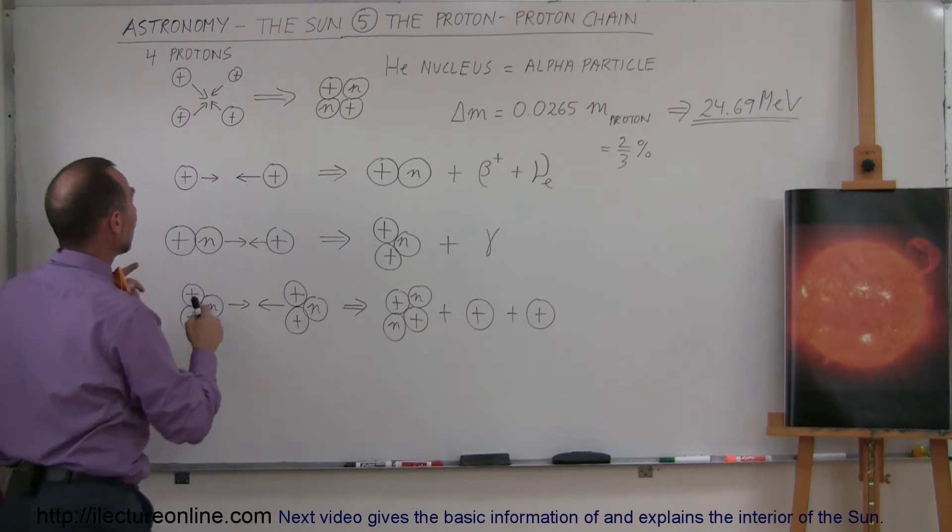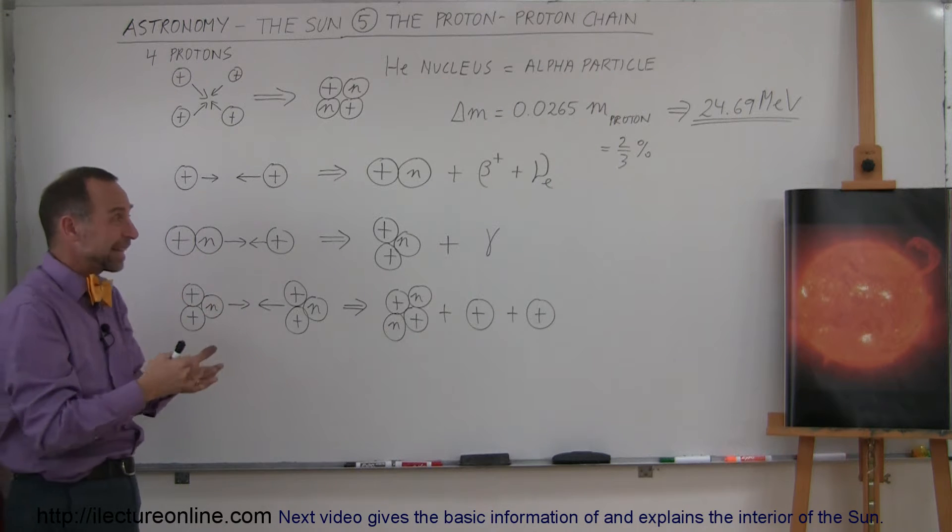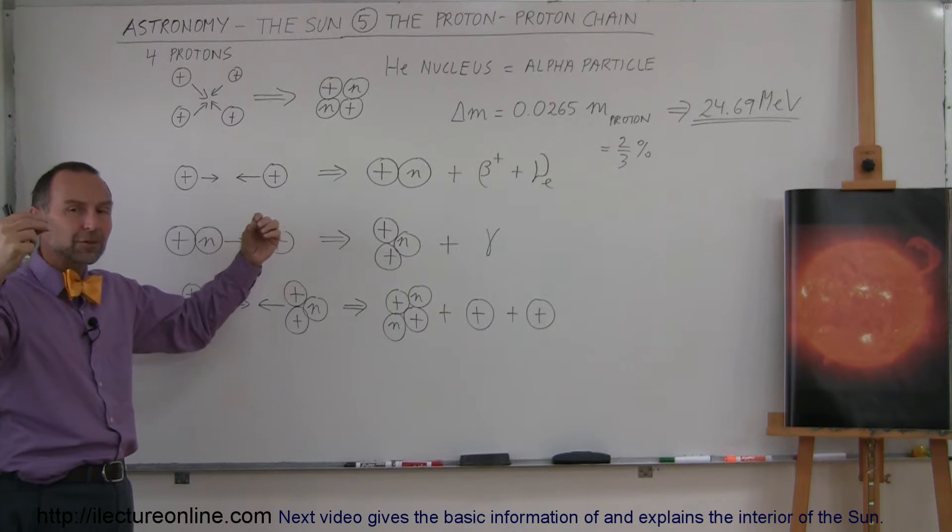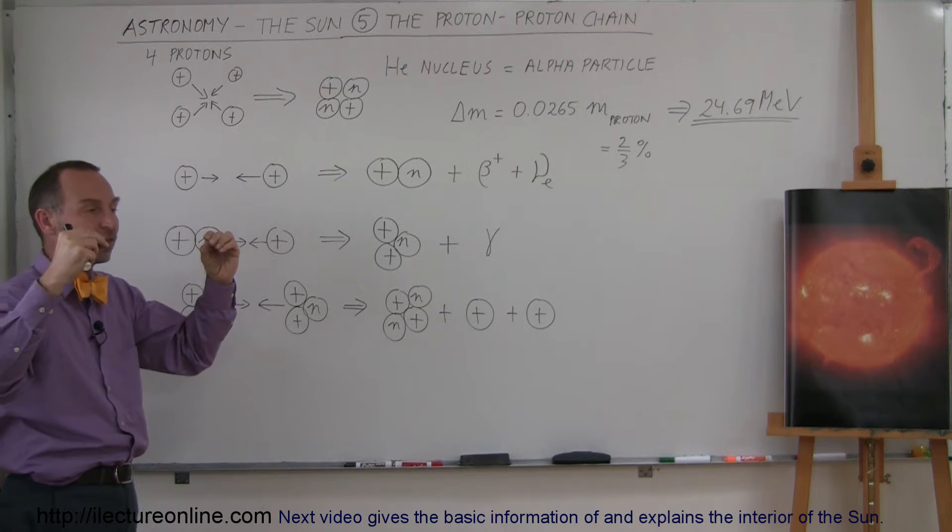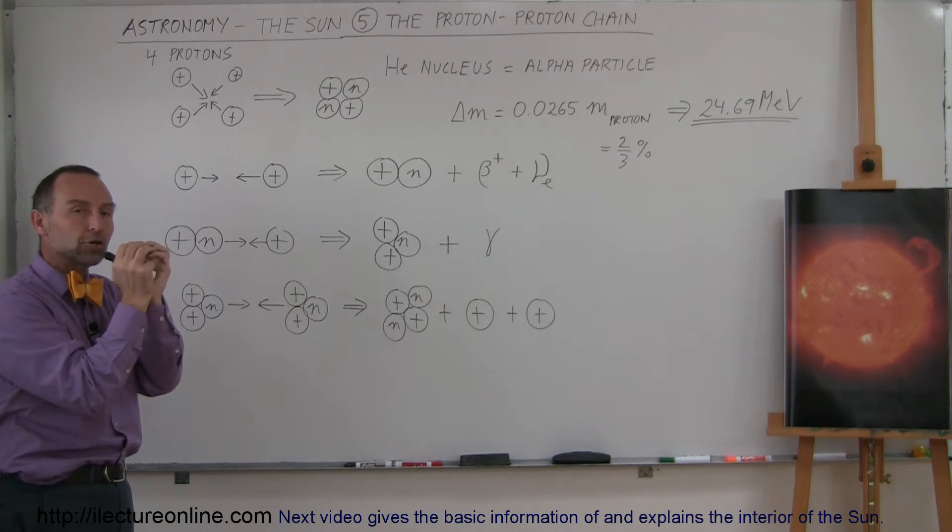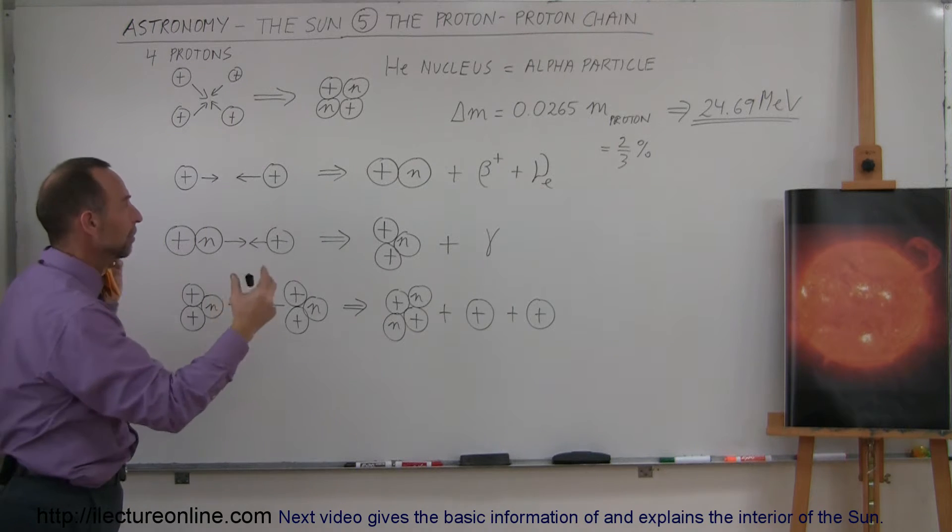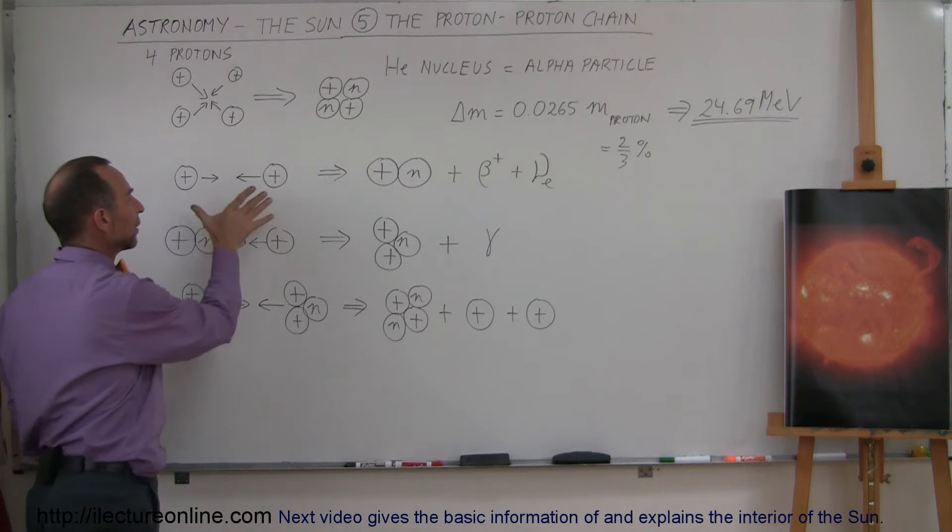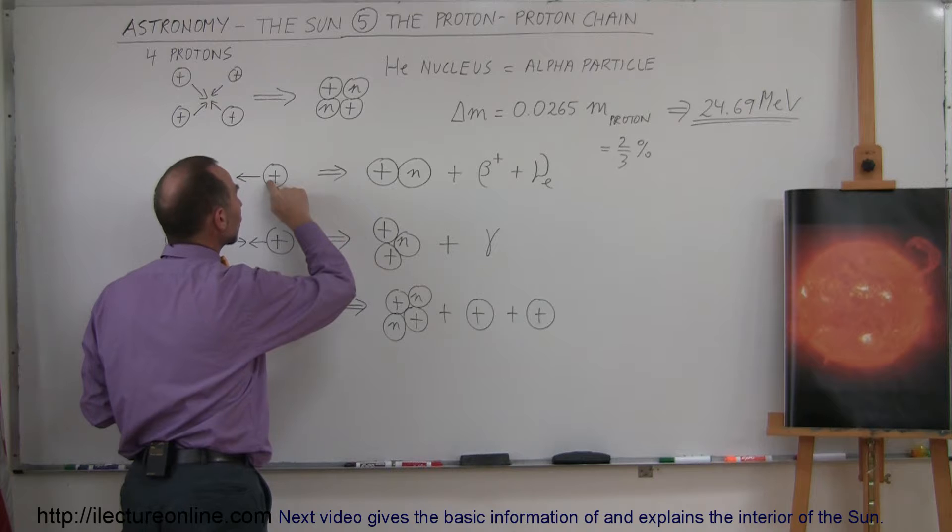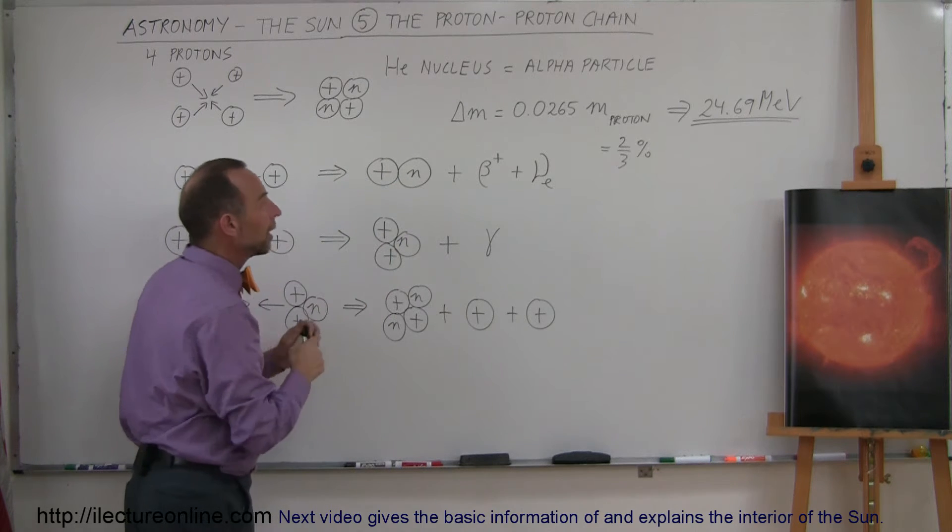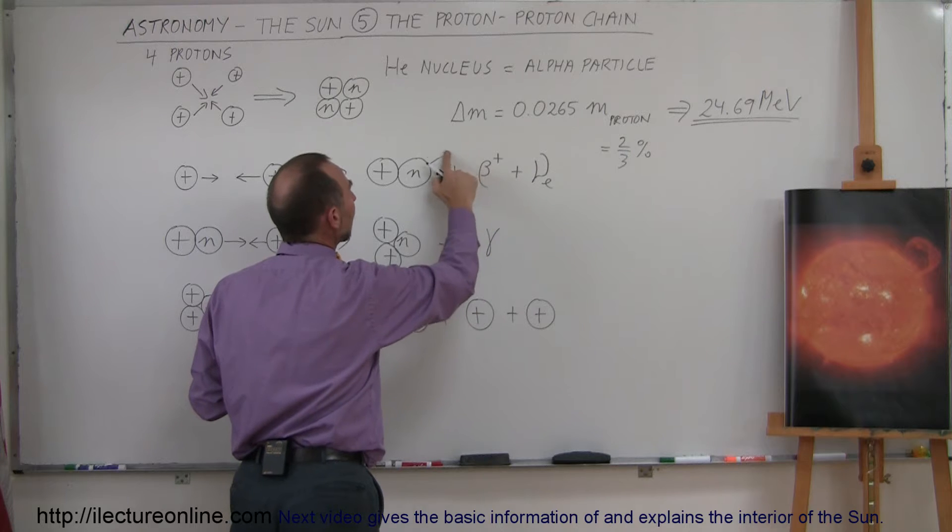So what first happens is two protons slam together. Again, it has to be hot enough at the center of the sun, at least 10 million degrees Kelvin, so they have enough speed to move so fast towards one another that they will actually slam into each other and have the strong nuclear force hold them together rather than have that enormous repulsive force repel them before they can touch. Well, if they do manage to slam together with high enough velocities, they will come together and one of the protons will actually convert itself to a neutron by emitting, by spitting out what we call a beta particle.